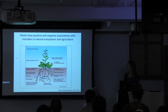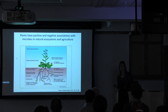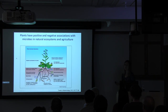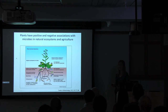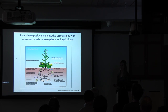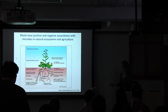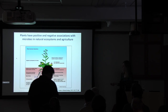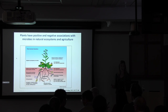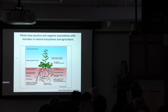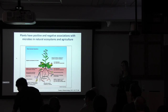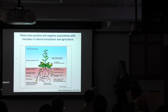Plants have a variety of different associations with microorganisms in nature and also in agriculture, and this significantly shapes plant health and productivity in these landscapes. We're all aware that there are positive associations between different microorganisms and plants, like nitrogen-fixing bacteria or mycorrhizal fungi that enable nutrient acquisition. But what we're interested in, in my group, are these negative associations — pathogens that can infect plants and decrease crop yields.